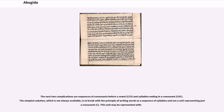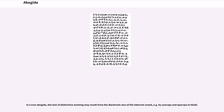The next two complications are sequences of consonants before a vowel (CCV) and syllables ending in a consonant (CVC). The simplest solution is to use a unit representing just a consonant (C). In a true abugida, the lack of distinctive marking may result from the diachronic loss of the inherent vowel, for example by syncope and apocope in Hindi.